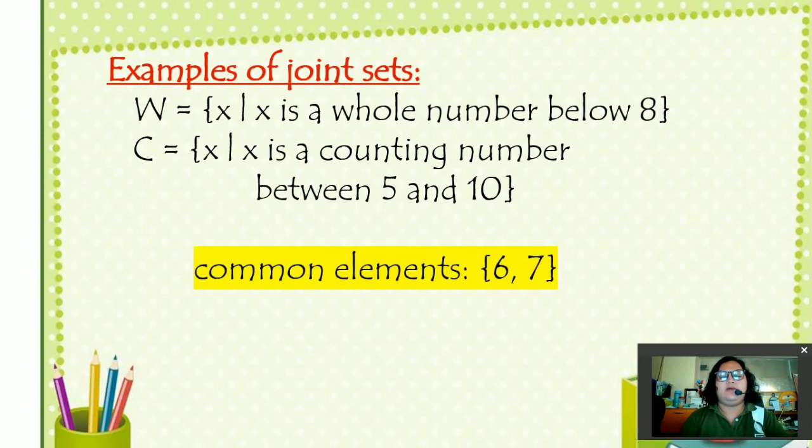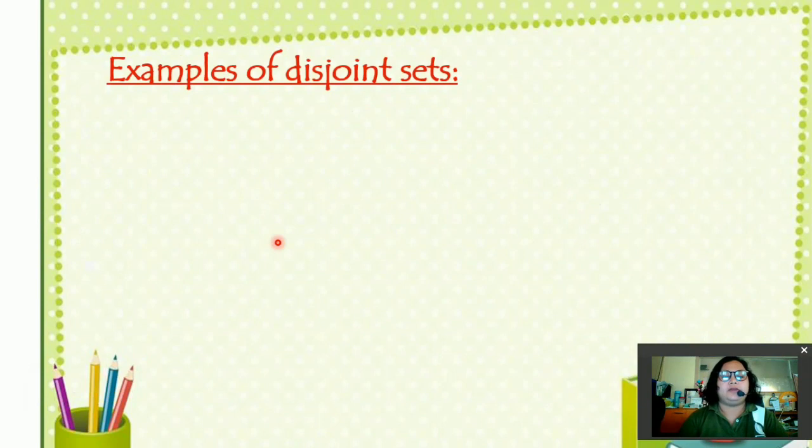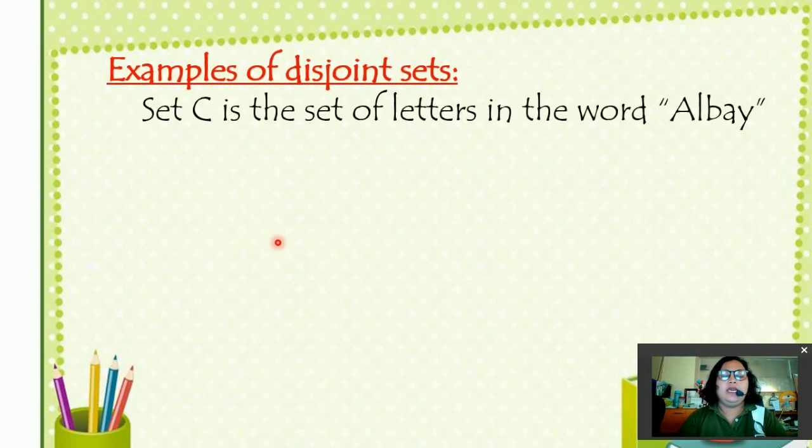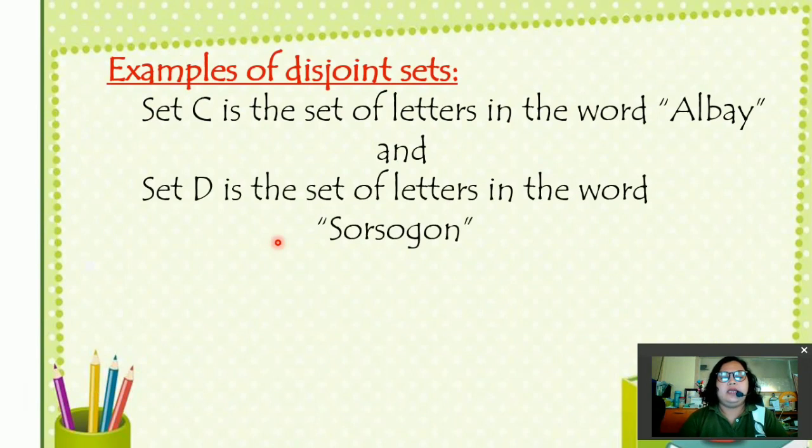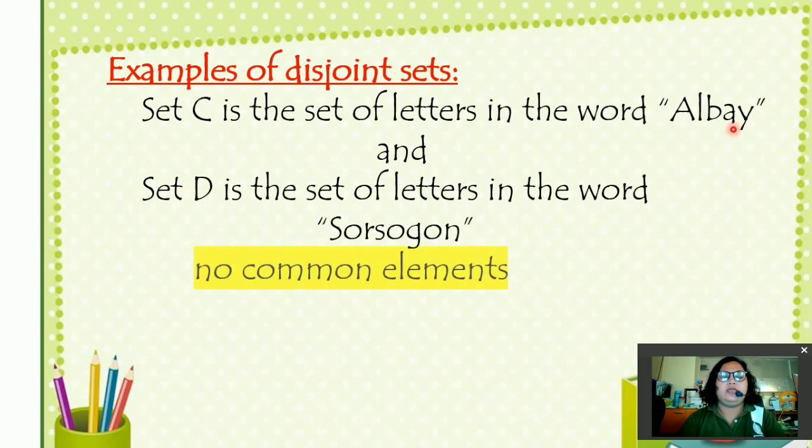Let us now have disjoint sets examples. Set C is a set of letters in the word albay. And set D is a set of letters in the word sarsogon. If you notice, there are no common letters. So that is why they are considered disjoint sets.